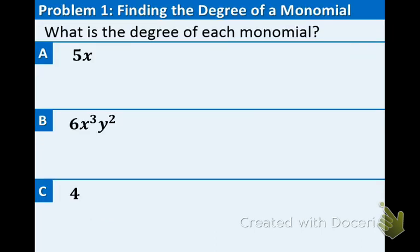Let's take a look at example one. We have 5x. The x has an invisible one in the exponent spot, so make sure you put that there. The exponent is one, so therefore, the degree is one. Remember, we're always going to be looking at the exponents. That's it for part A.